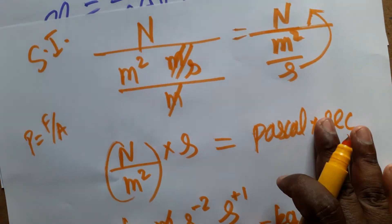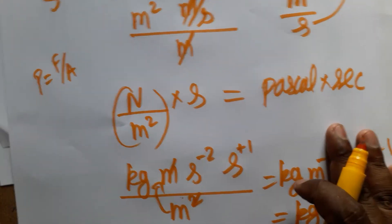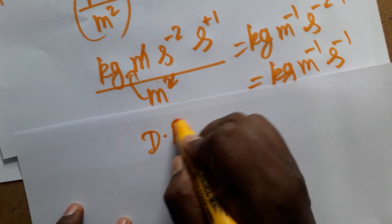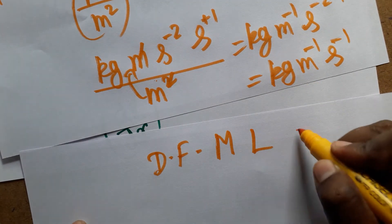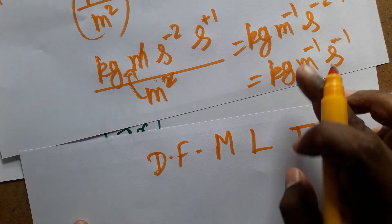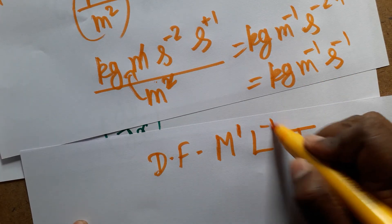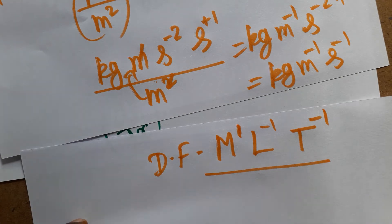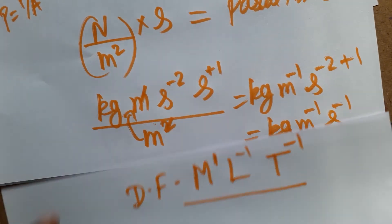The dimensional formula for coefficient of viscosity can also be written as: M¹ L⁻¹ T⁻¹, where M is mass, L is length, and T is time.